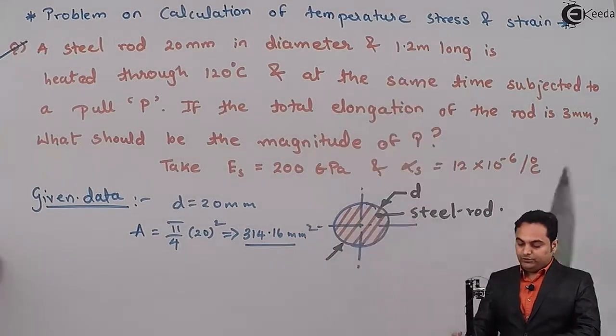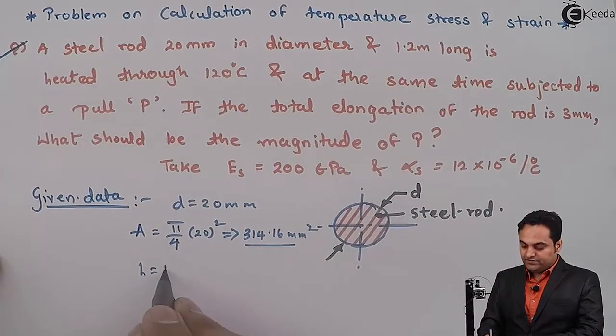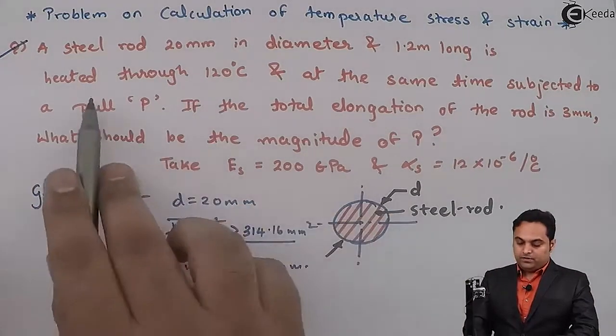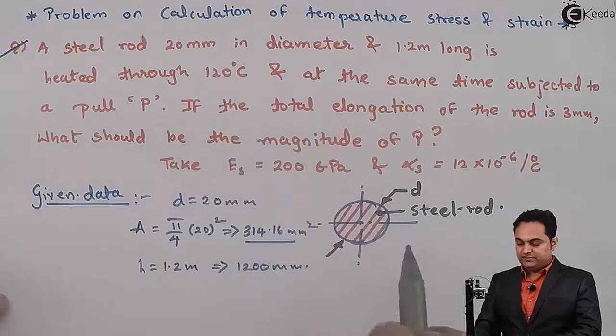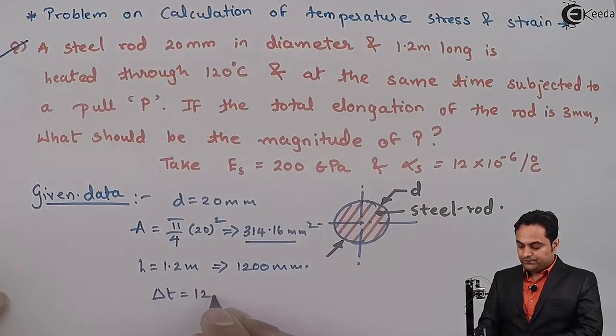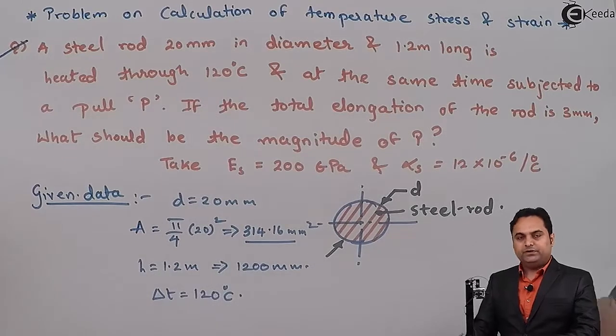Next, 1.2 meter long so its length is given 1200 mm, is heated through 120 degree Celsius. So the change in temperature is given 120 degree Celsius.